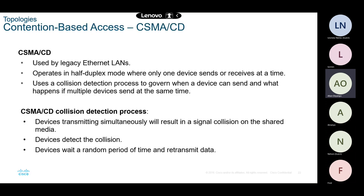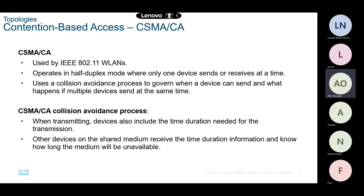In collision detection — used by Ethernet hubs operating on half duplex — whenever two devices try to send and receive data at the same time a collision occurs because they share a medium and only one should be transmitting at a time. Once a collision is detected, both devices wait for a random period of time before transmitting again.